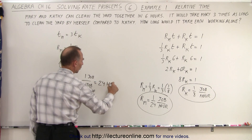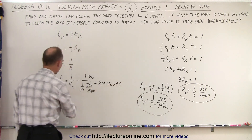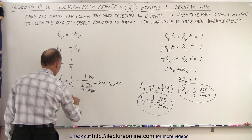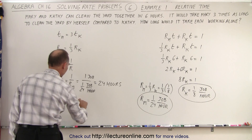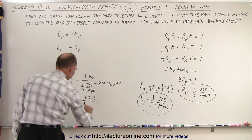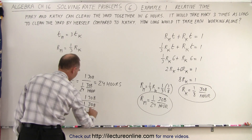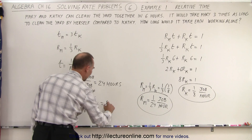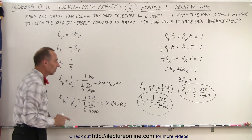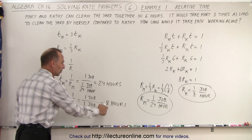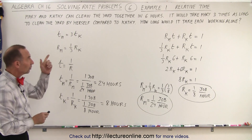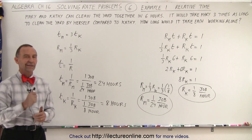That equals twenty-four hours, so the amount of time Mary would need by herself is twenty-four hours. The time for Kathy is one over one-eighth of a job per hour, which equals eight hours for Kathy to do it by herself. And indeed twenty-four is three times eight, so it checks out — and together they can do it in six hours. That is how it's done.